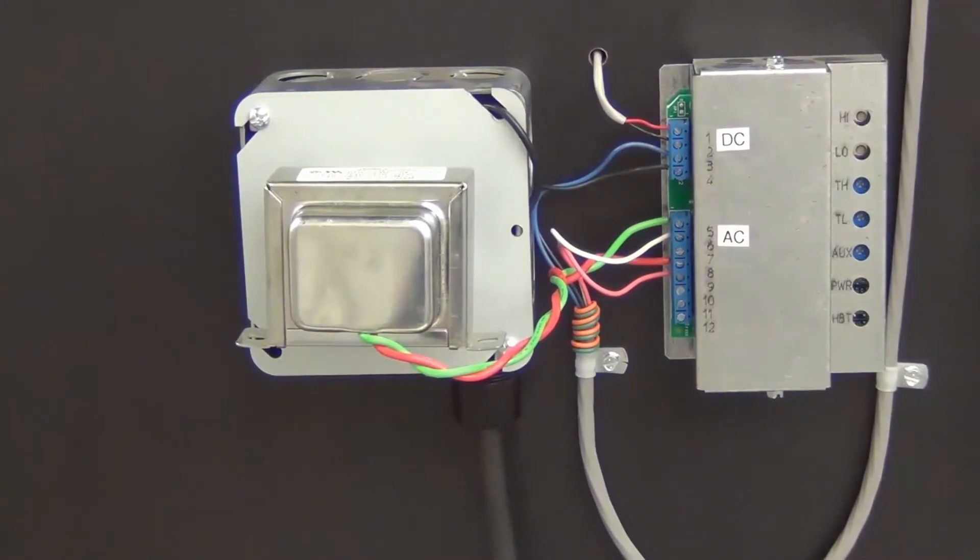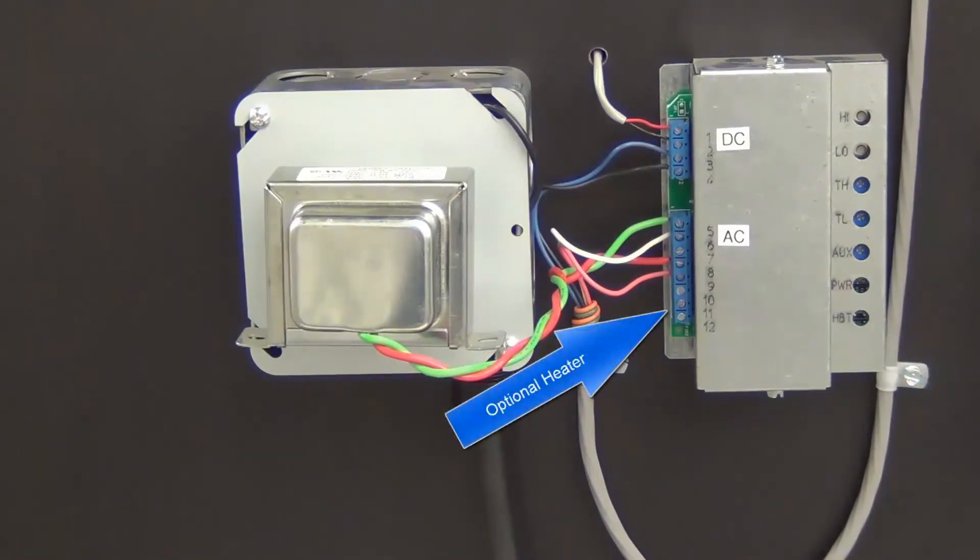The wiring connections shown in this installation are as follows: Power to the transformer, either 120 or 240 volt. Low voltage wire from the current transducer to terminals 1 and 2. Terminals 3 and 4 are low voltage DC to the EC supply fan. Terminals 5 and 7 are low voltage from the 24 volt transformer. Terminals 6 and 8 are for the low voltage connection to the ADC shutoff damper. Terminals 9 and 10 can be for an optional heater.